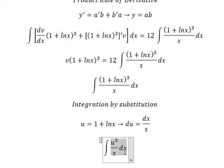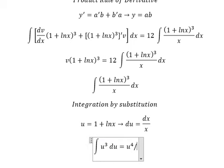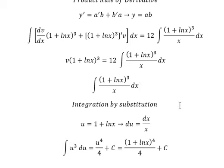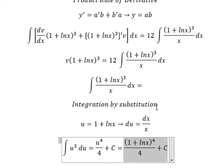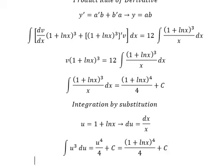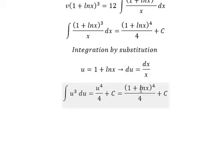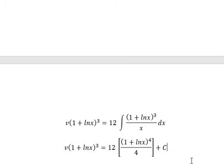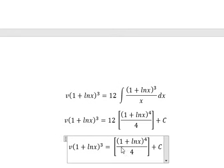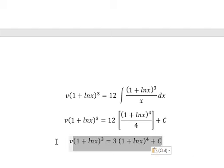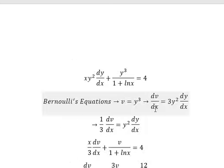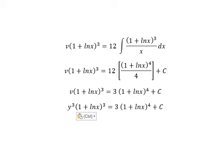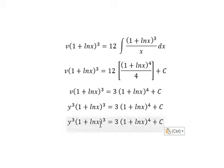The integration of u — we substitute back for u. That gives us the integrated result. Now we have the final expression. Number 12 divided by number 4 gives us number 3. Substituting back for v, which equals y to the power of 3, we then divide both sides by the integrating factor.